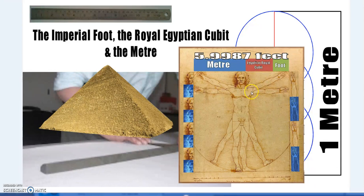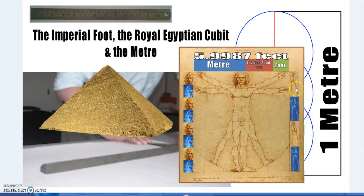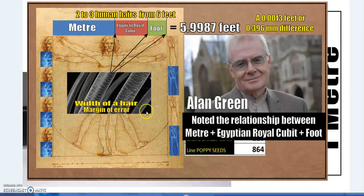At the beginning of this series I was focusing on the Vitruvian Man by Leonardo da Vinci, which is based on Vitruvius's writings — the Roman architect. As Alan Green points out, there is a connection between the meter, the foot, and the cubit and how they come together. The idealized man in the modern system is four cubits or six English feet. A meter plus an Egyptian royal cubit plus a foot equals 5.9987 feet — just over one third of a millimeter difference.